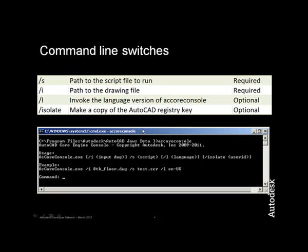accoreconsole.exe has four command line switches: /s for the script file path, /i for the drawing file path, /l for the language, and /isolate for registry product root key isolation. When accoreconsole.exe is launched without any switches, it displays only the command prompt, where you can type any AutoCAD command you would usually use within AutoCAD.